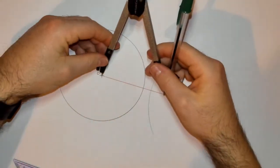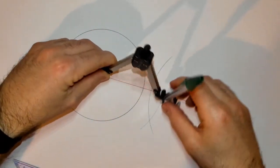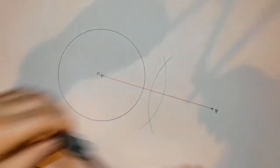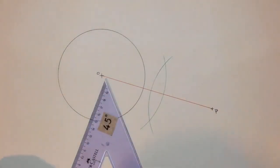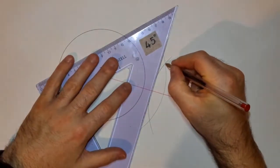Keep the same distance in your compass, come to the opposite side. Having that bisected, I am now going to find the midpoint of the line OP.